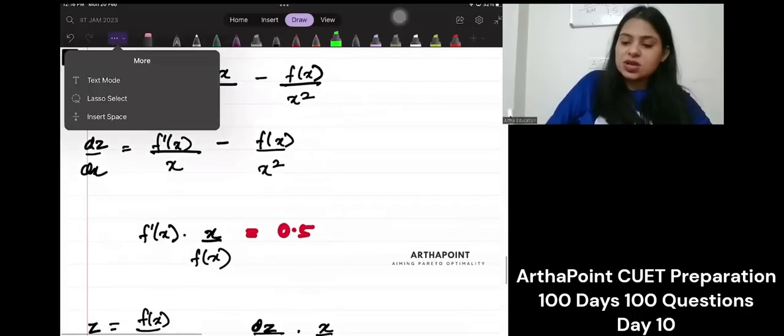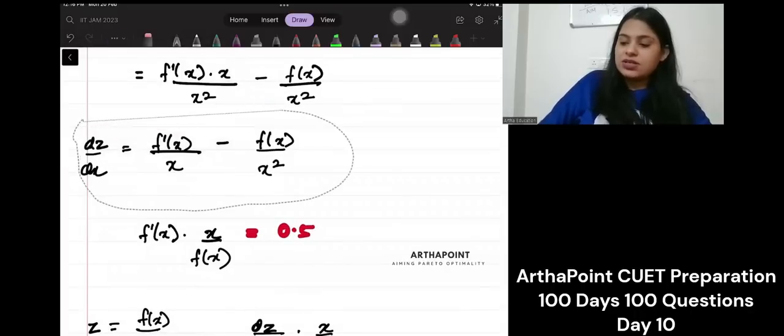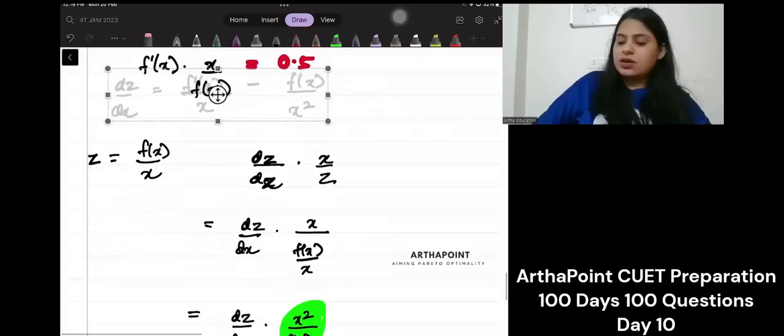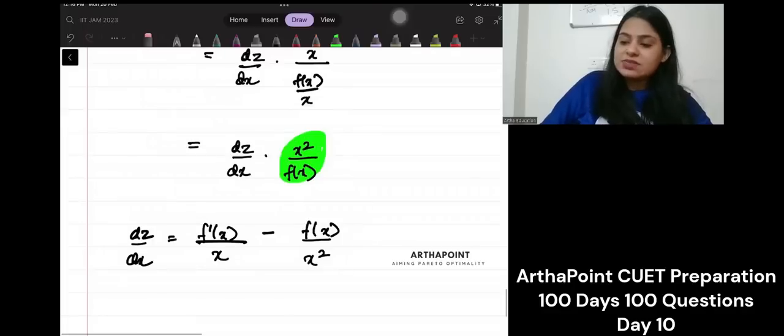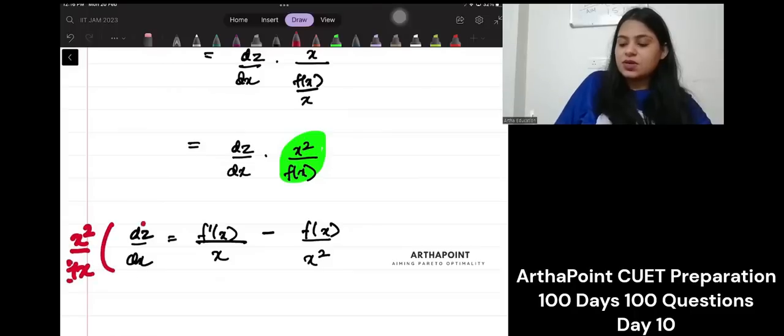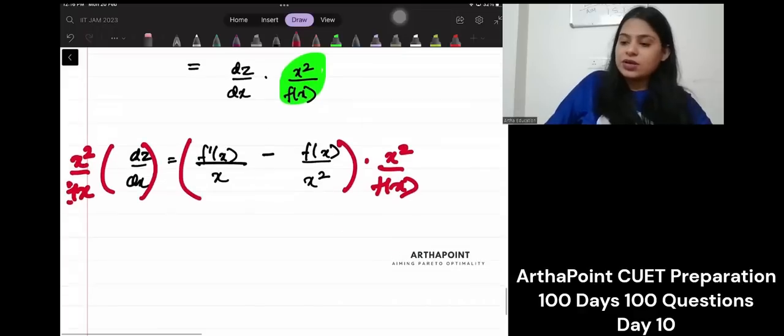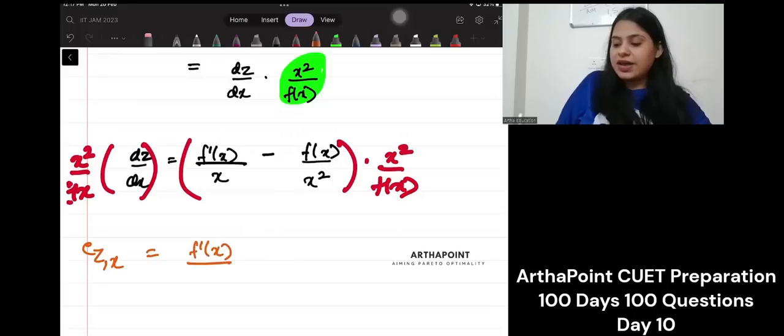Let's do that. So, let me just take this equation, right? Let's just go ahead and take this equation and let us multiply x square by fx here and x square by fx here. What will you get? What will you get? This will become elasticity of z with respect to x.